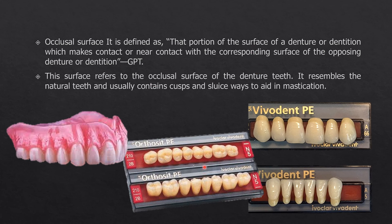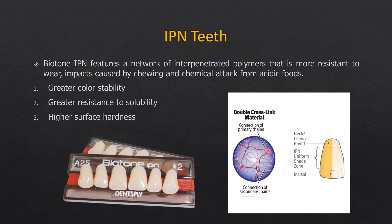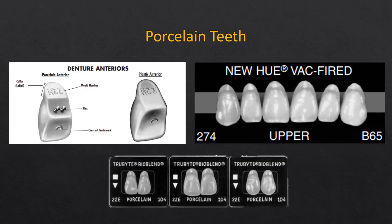There are many types of manufacturers and materials used for fabrication of denture teeth, available in different molds, shades, and sizes. One type is IPN — interpenetrating polymer network — teeth, manufactured by Dentsply under the brand name Biotone IPN. They have greater color stability, greater resistance to solubility, and higher hardness than conventional polymethyl methacrylate (PMMA) acrylic teeth, due to two polymer networks entangled within each other — giving greater resistance to fracture and greater hardness.